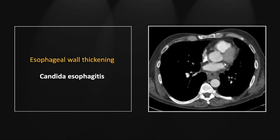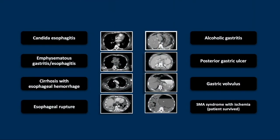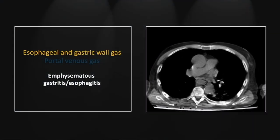So that's a case of candidal esophagitis. Our next case is emphysematous gastritis and esophagitis. You see the esophagitis here — a ring of intramural gas in the mid-esophagus that is really present throughout its length.